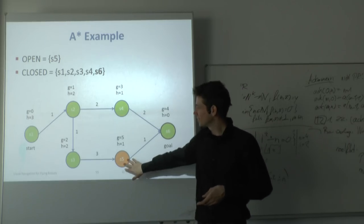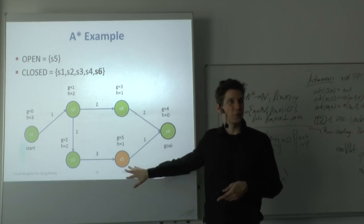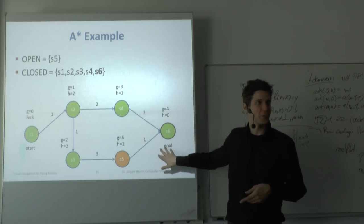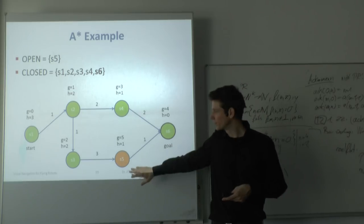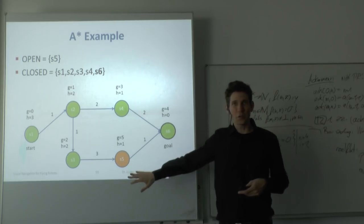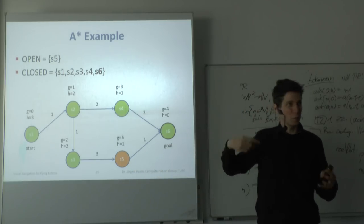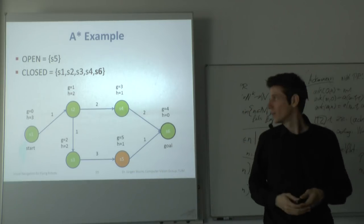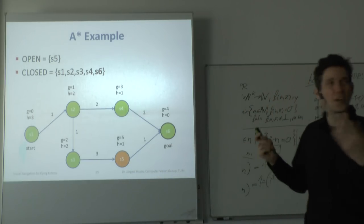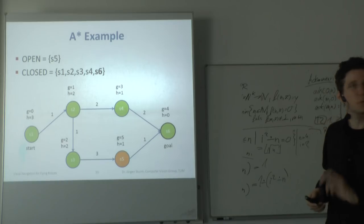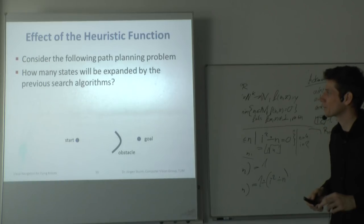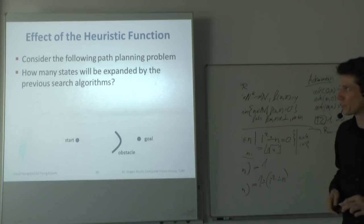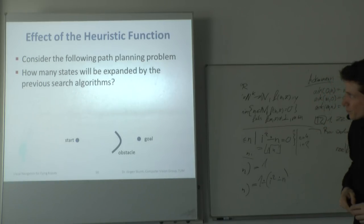There was a mistake in the example: the g-value for one node should be 5, making two states have the same cost at that step. Regardless, the key point is that the heuristic allows A* to skip unnecessary nodes — the larger the graph, the more efficient this becomes.